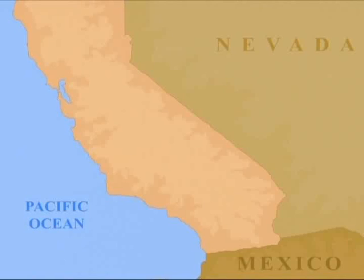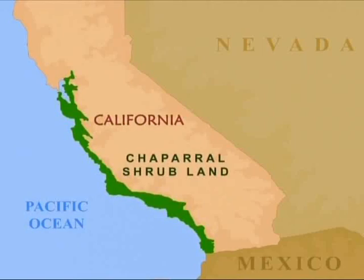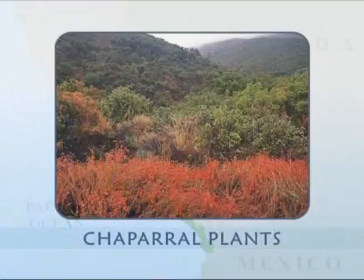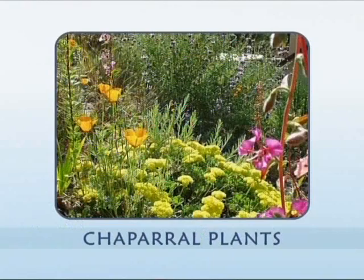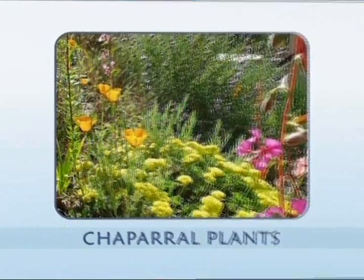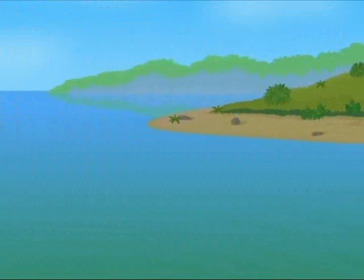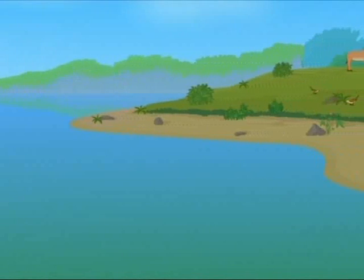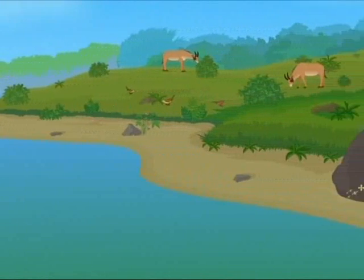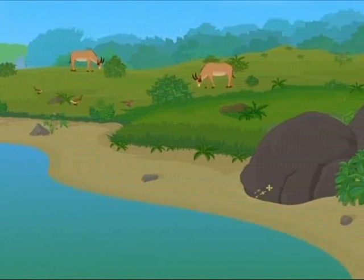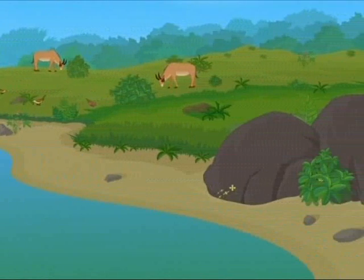This shrubland on the California coast in North America contains a variety of plants and is called chaparral. Many offshore islands and a great number of coastal hills in Southern California were originally covered by chaparral.